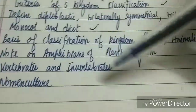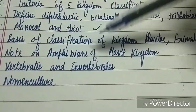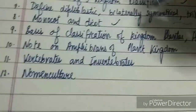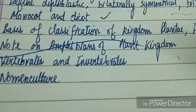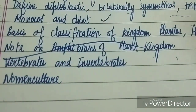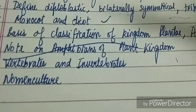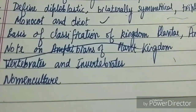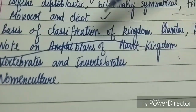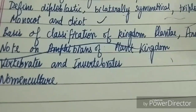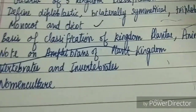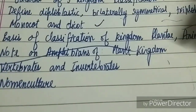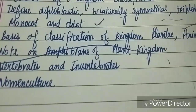Sometimes a question can be written like: 'Write a note on amphibians of the plant kingdom.' The amphibians of the plant kingdom are Bryophyta. So essentially, this question means write a note on Bryophyta.